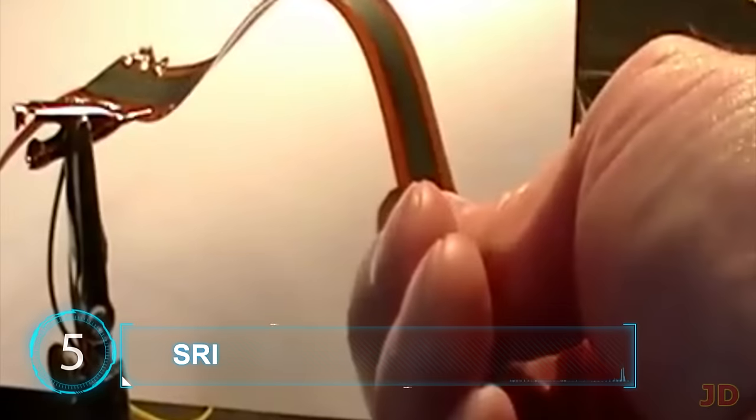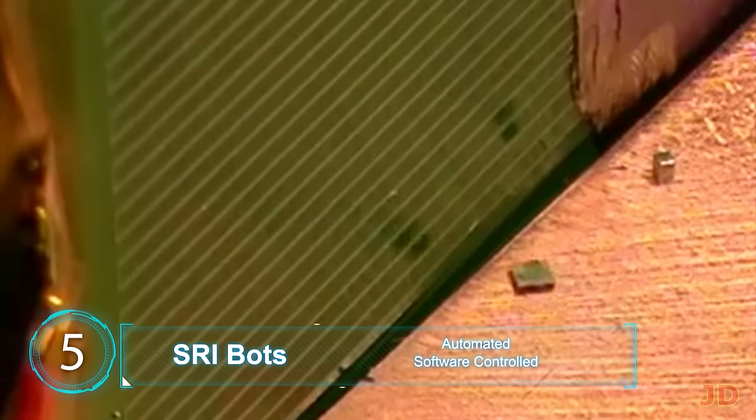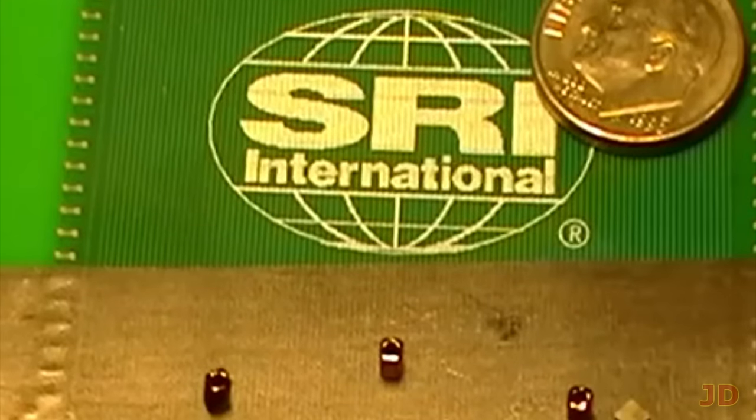At number 5, SRI Bots. Controlled through magnetic fields, microbots can go up to 35cm a second and even climb up walls. Large groups can be used to build complex objects such as high-quality parts, electronics, and even be used for inspecting equipment.